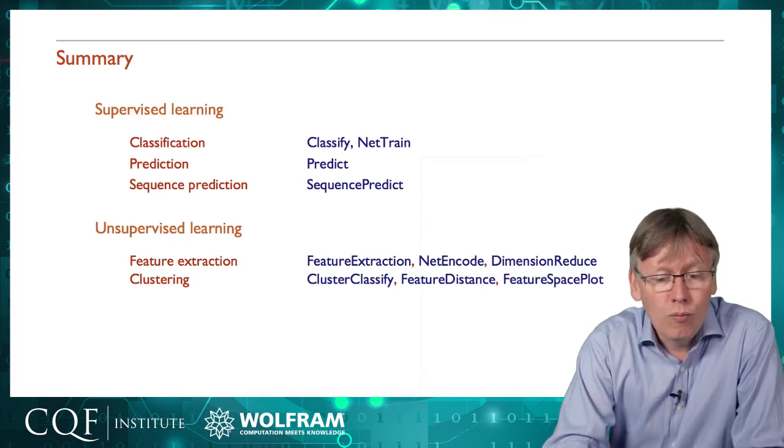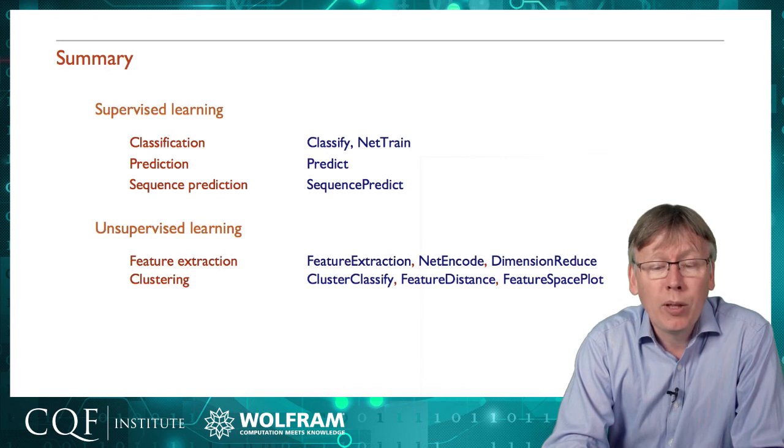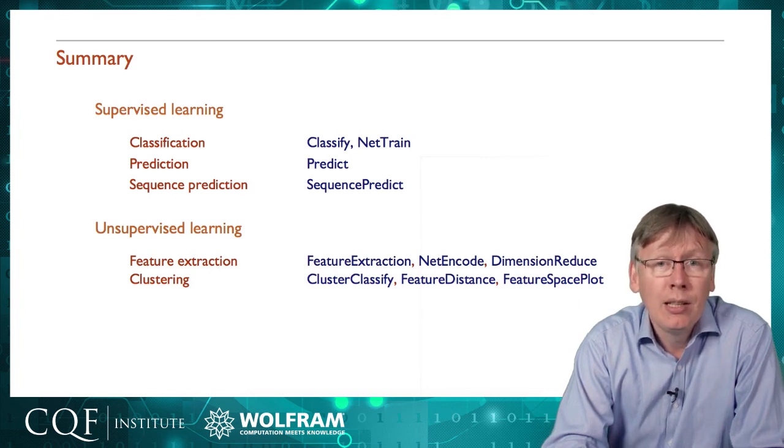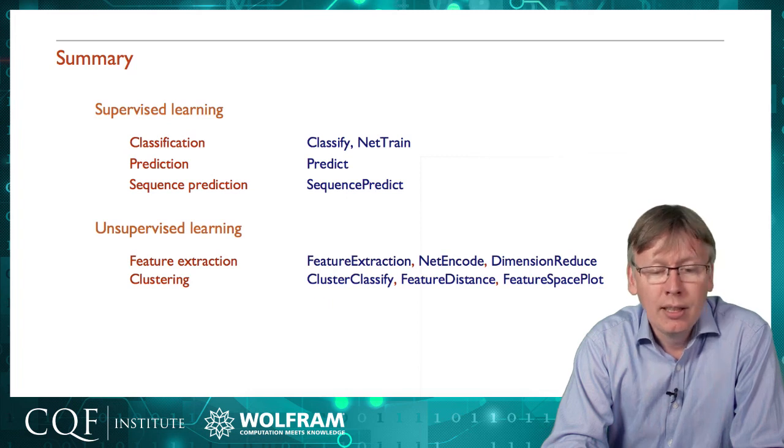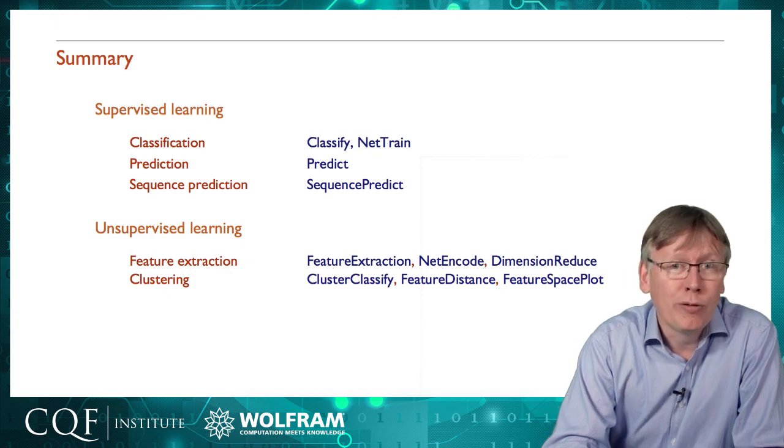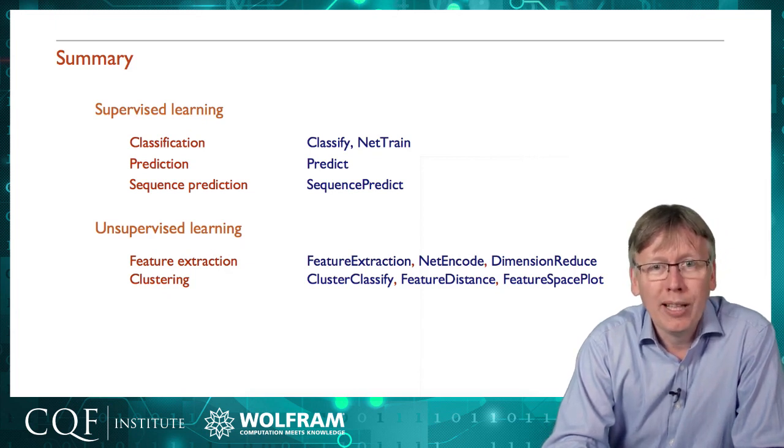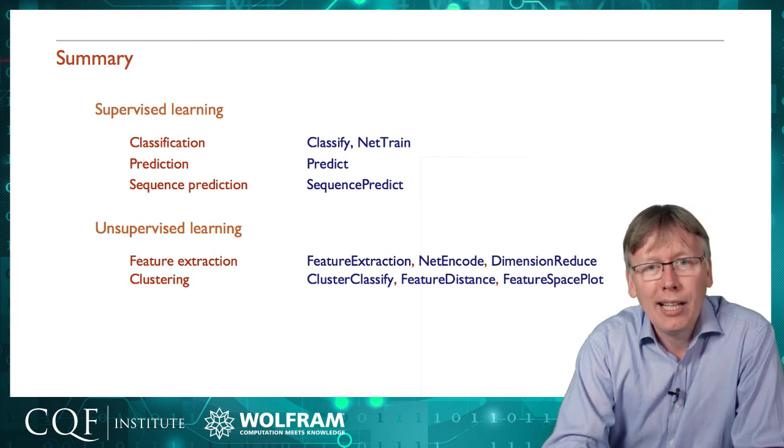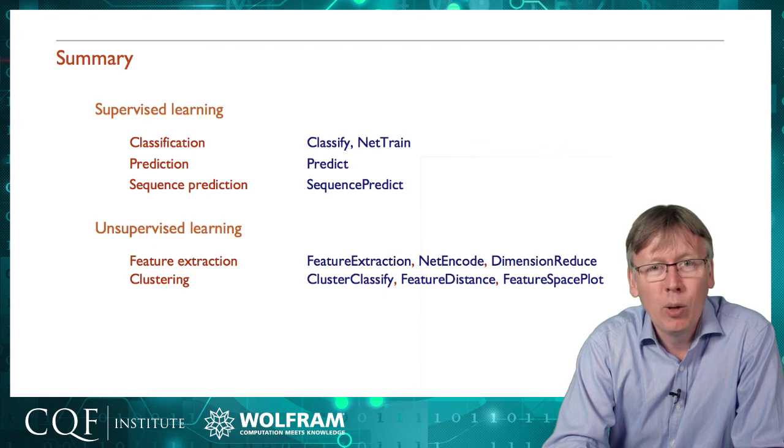So to sum up the series, really, while I've talked about quite a lot of issues, the bits of the Wolfram language that you need to be able to go and replicate this are fairly limited. Classification, you only need to know about the commands classify and net train. For prediction, the command is predict. Sequence prediction, it's sequence predict. And feature extraction is the main command within the unsupervised and cluster classify. You can find out more about those commands at reference.wolfram.com, where you'll find full documentation on the whole Wolfram language. And you can try some of these things out for free in the Wolfram public cloud, where you can just create an account and start doing basic machine learning right there in the web browser.